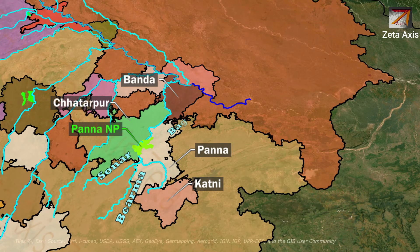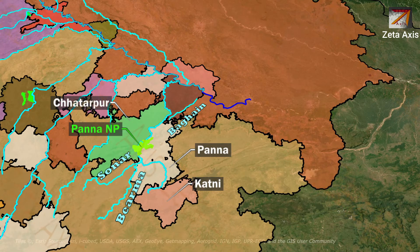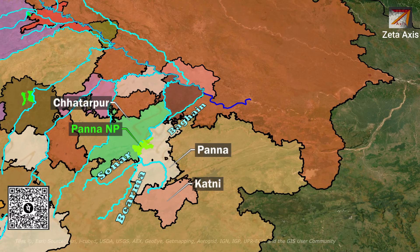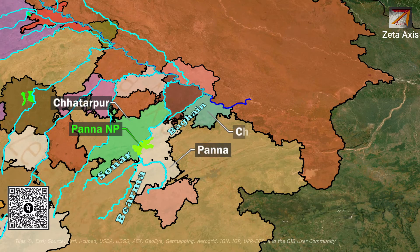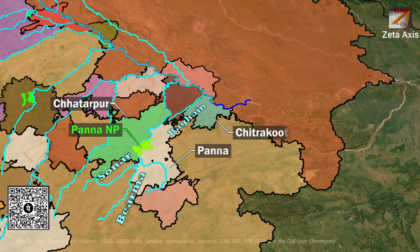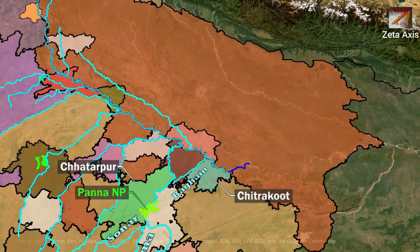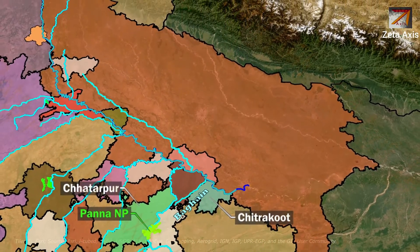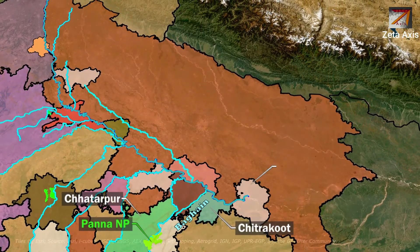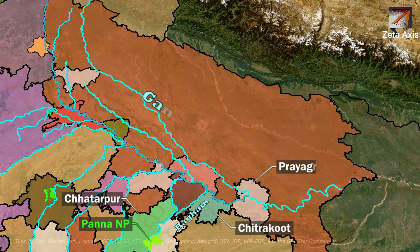Within Banda, another river, Bagan, originating from Panna district of MP, meets the Yamuna. The Bagan river forms the boundary of Chitrakoot district and Banda district. From Chitrakoot, the Yamuna enters Prayagraj and finally merges with the Ganga river.